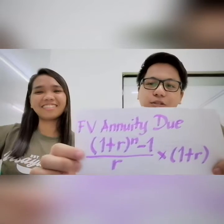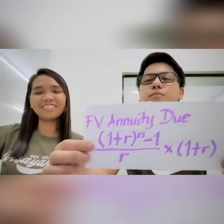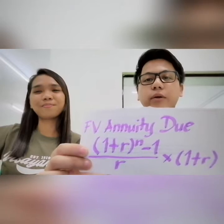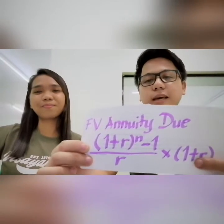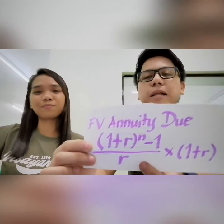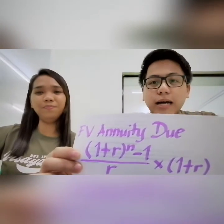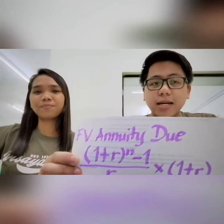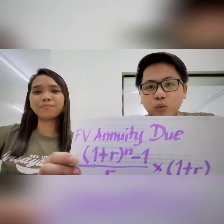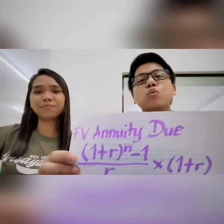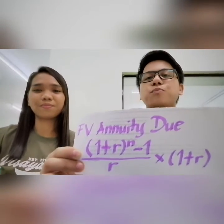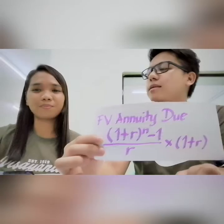For the last one, we are computing for the future value factor of an annuity due. This formula is quite similar to the future value for an ordinary annuity, except you have to multiply by 1 plus the rate. Again, this accounts for the fact that each payment is made at the beginning, which earns interest for an additional period.